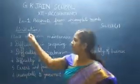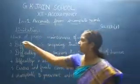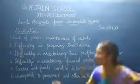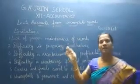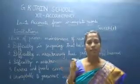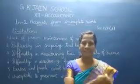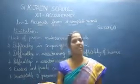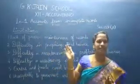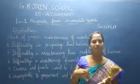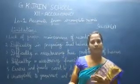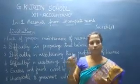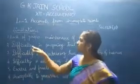The next topic is limitations of incomplete records. The first limitation is lack of proper maintenance of records. They have not properly maintained their accounts — only cash and personal accounts of customers and creditors are maintained, and the other accounts are left. So when we want to know what expenditure was made for repairs or for salaries, we need to cross-check but we don't have any records.